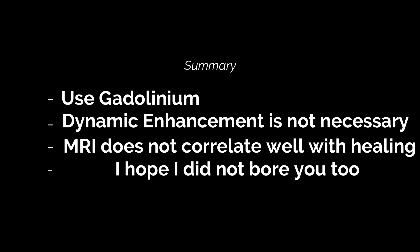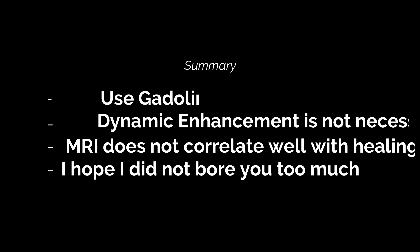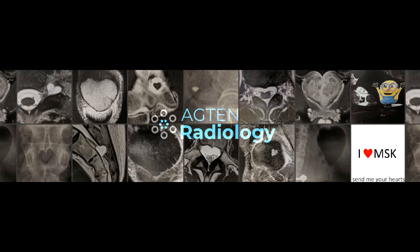To summarize, I would suggest gadolinium-enhanced MRI for the vitality assessment of proximal pole fragments in scaphoid non-union, and try to use a detailed description: whether it is enhancing, whether it is patchy, diffuse, diminished, or absent — and try not to simply answer the binary question of vital versus necrotic fragment. Ideally, talk to your hand surgeon to understand what they need from your MR imaging preoperatively and how it impacts their decision to use either a non-vascularized or a vascularized bone graft.